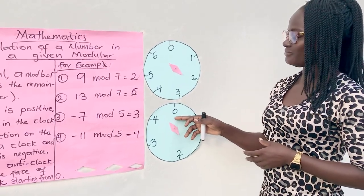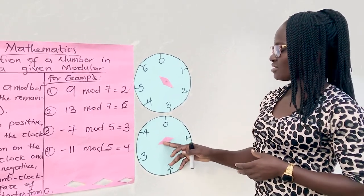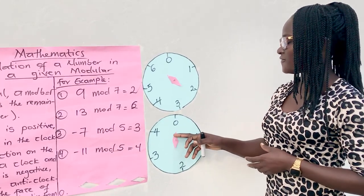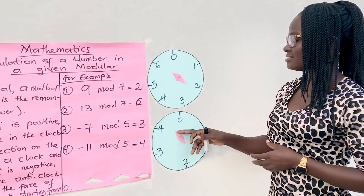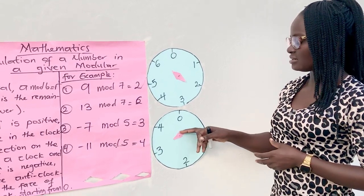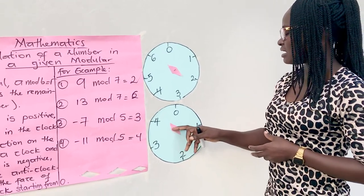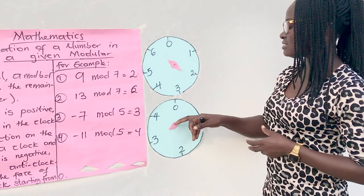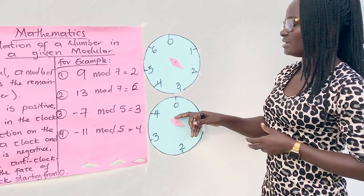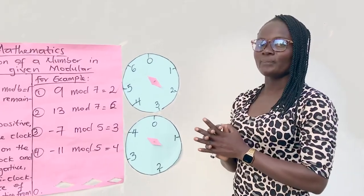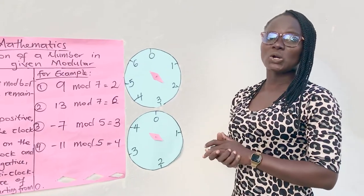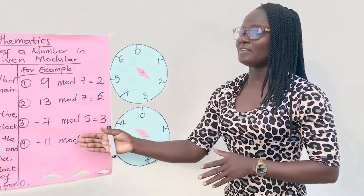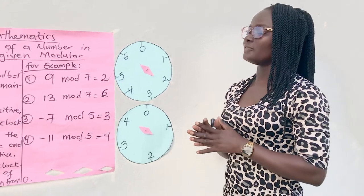One, two, three, four, five, six, seven, eight, nine, ten, eleven. We landed on four. Therefore, we can conclude that negative eleven mod five is four.